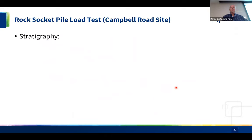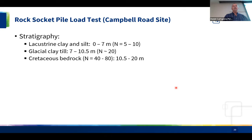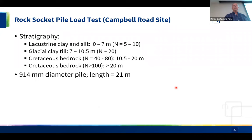Now for the Campbell Road site — the rock socket load test. Stratigraphy there: lacustrine silts and clay in the upper 7 meters with blow counts of 5 to 10, glacial till to about 10.5 meters with blow counts around 20, then bedrock. The upper 9.5 meters of bedrock was weathered with blow counts of 40 to 80, and below 20 meters competent bedrock was defined as blow counts over 100. The test pile was 914 mm diameter and 21 meters long, tested in December 2008.